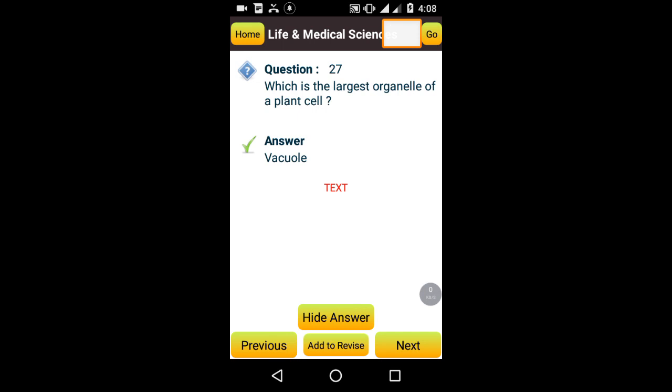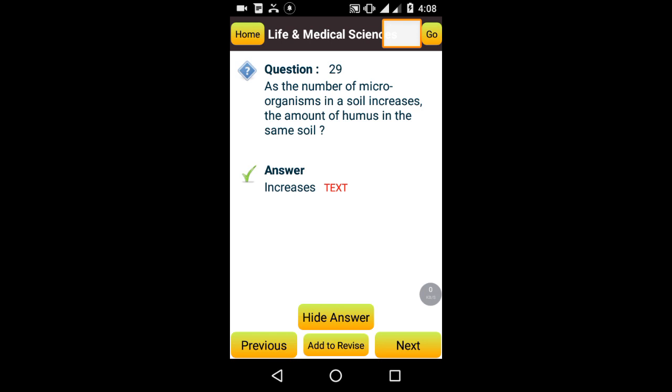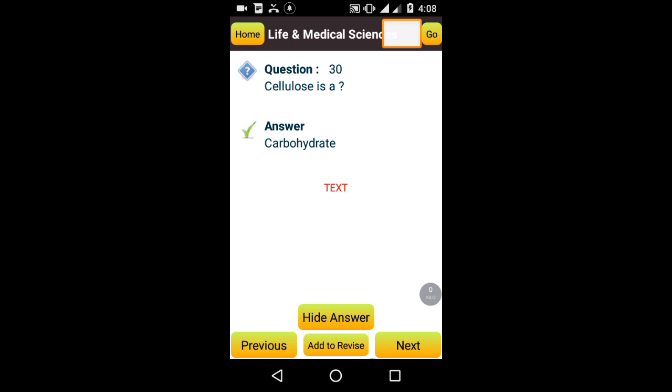Which is the largest organelle of a plant cell? Vacuoles. As the amount of clay in a soil increases, its water retaining capacity increases. At the number of macro organisms in the soil increases, the amount of humus in the same soil increases. Cellulose is a carbohydrate. Damping of seedling is due to the fungi Pythium debaryanum.